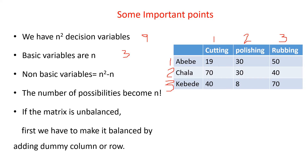The remaining decision variables are non-basic variables, that is n-squared minus n. In this particular case, 9 minus 3 equals 6, so 6 will be the non-basic variables.